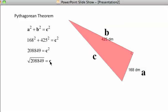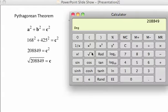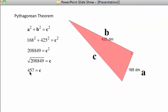So c is going to be the square root of that number. And then, back to the calculator, and square root. There we go, 457. So c is 457. And that's our answer.